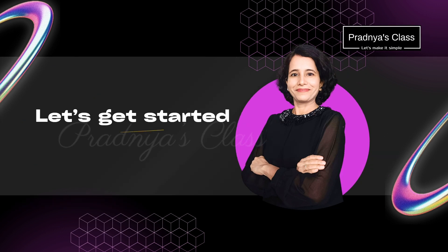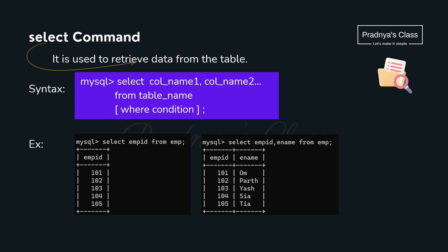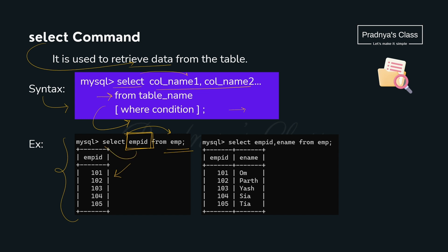The SELECT command is used to retrieve data. The syntax is: the keyword SELECT followed by the list of columns you need to display, then FROM table_name, and optionally a WHERE clause for conditions. For example, SELECT emp_id FROM employee displays only the emp_id column. If you have more than one column to display, you can separate them by comma.